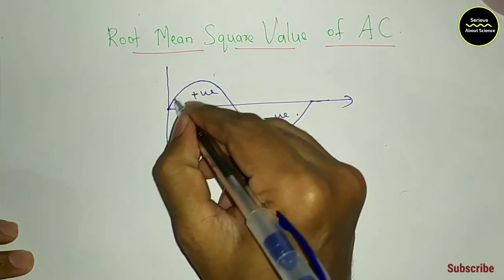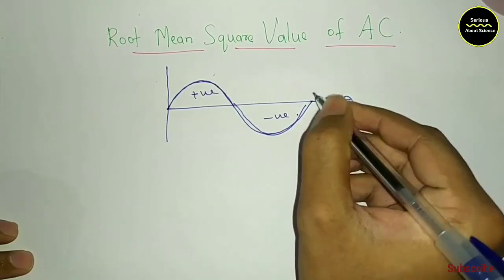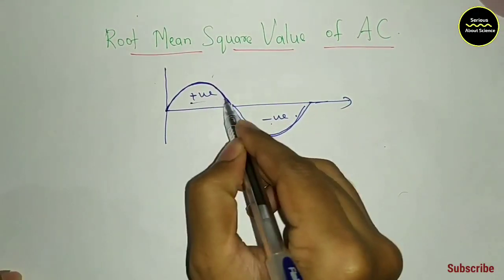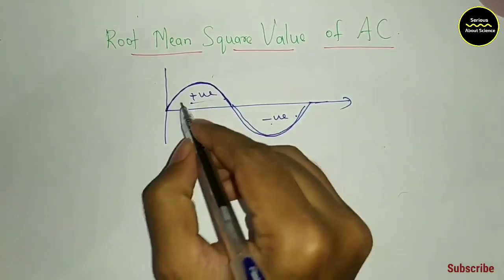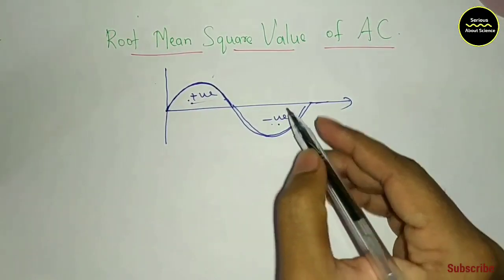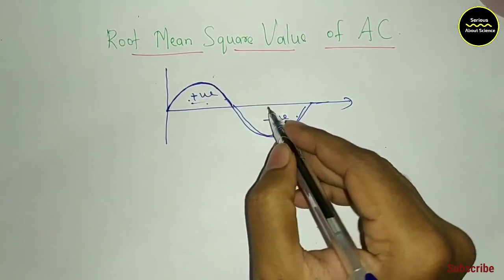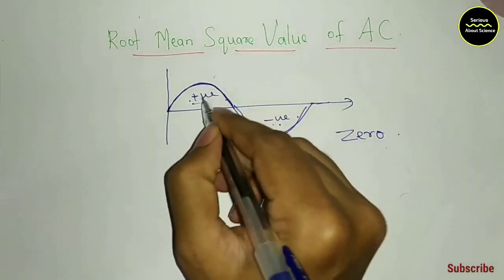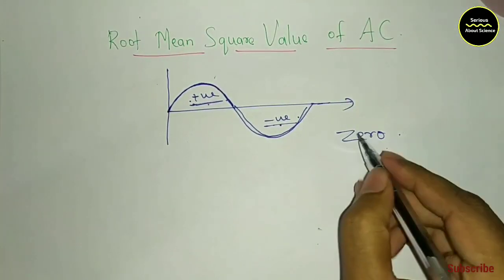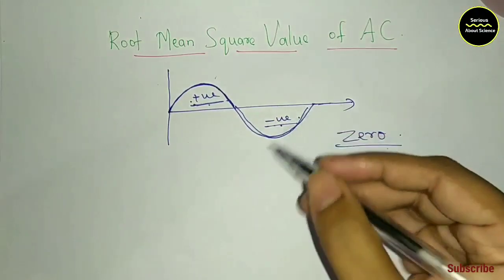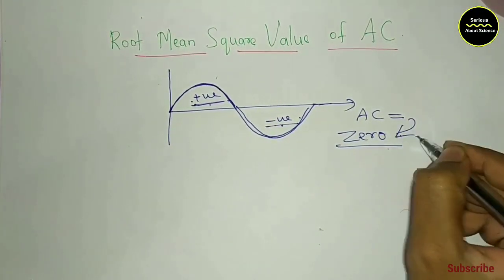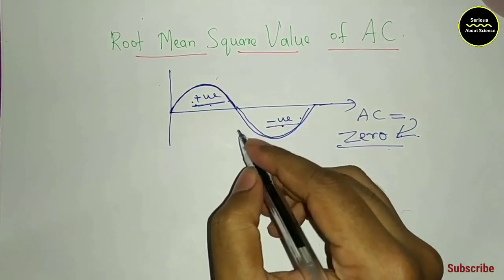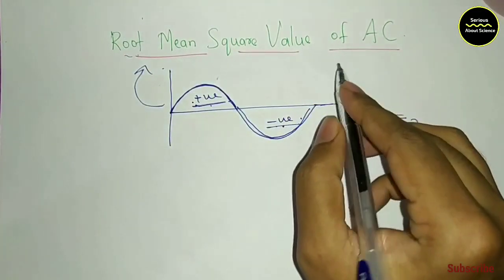In the full cycle, we are using the negative cycle as a full cycle. The positive cycle and the negative cycle are equal but in the opposite direction, so their sum is zero. That's why the average value of AC is zero. That's why we introduce the RMS value of AC.